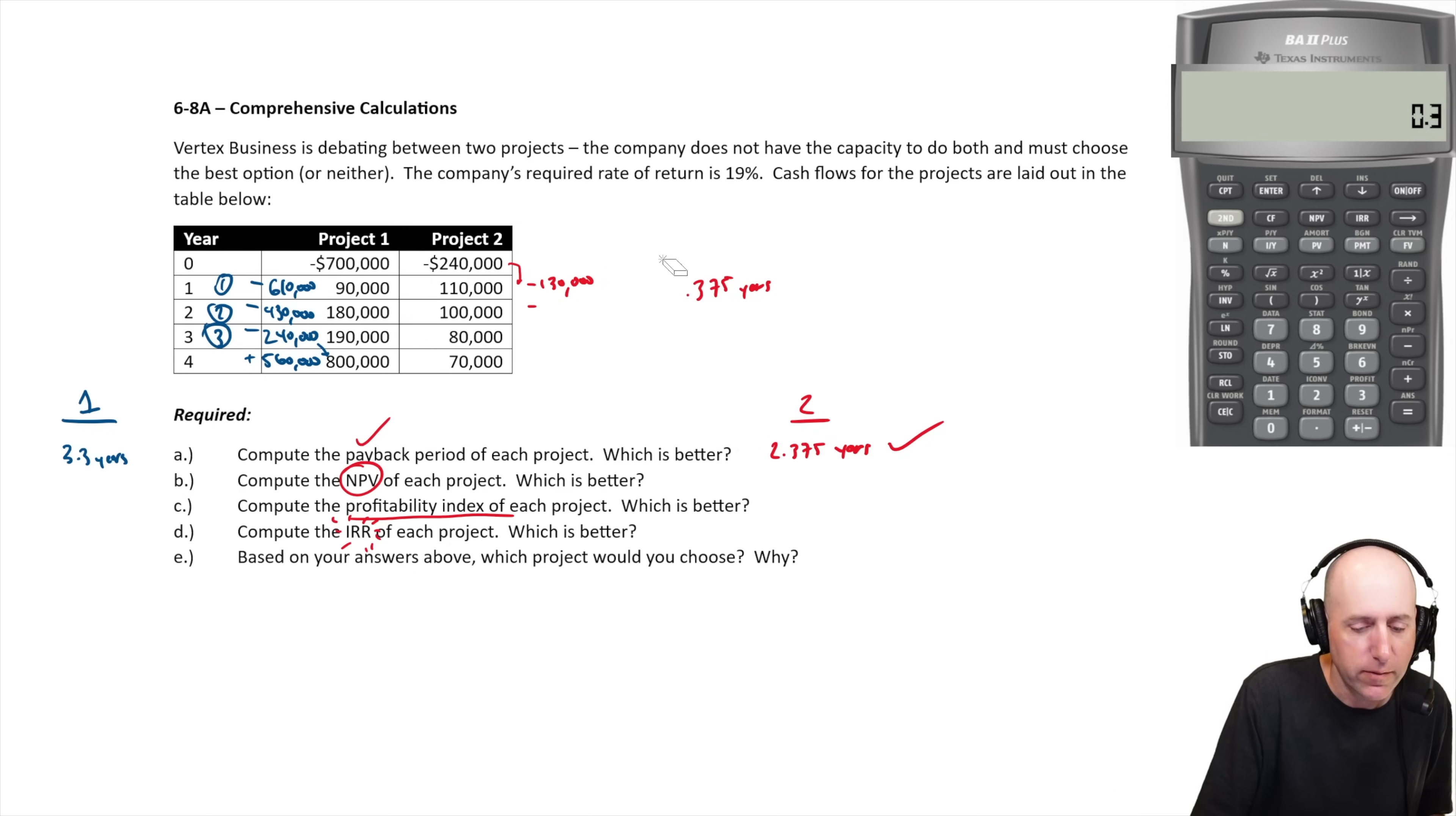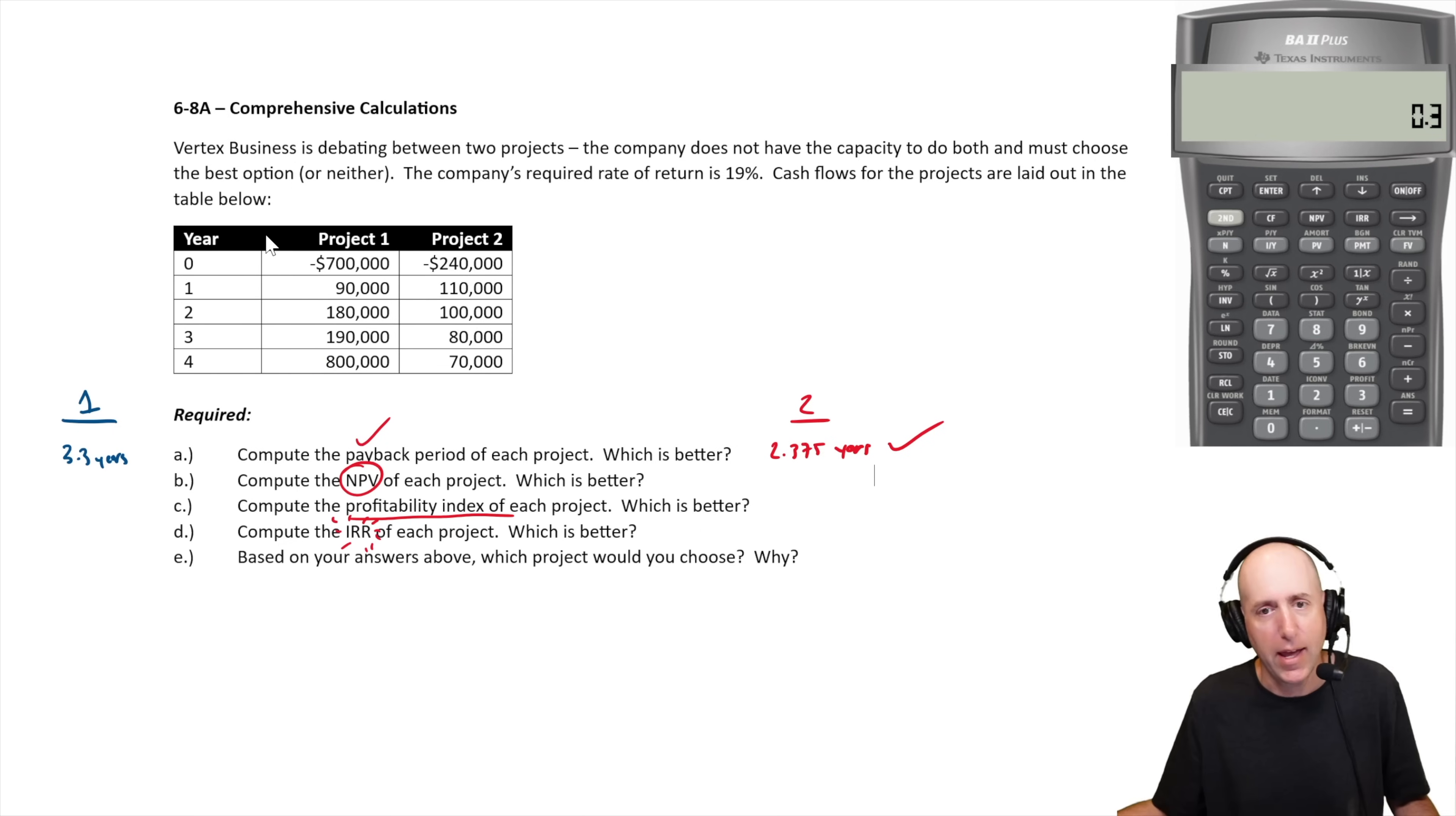Let's do net present value. Now to do net present value, I'm not going to do by hand just because we've got our financial calculator. I'll show you how to do it by hand. I'll show you the calculations I would do for project two. So you divide, so you got to discount your cash flows. That's the thing with a payback period, there's no discounting of the cash flow. So it's, that's why we call it back of the napkin math, because it's rough work.